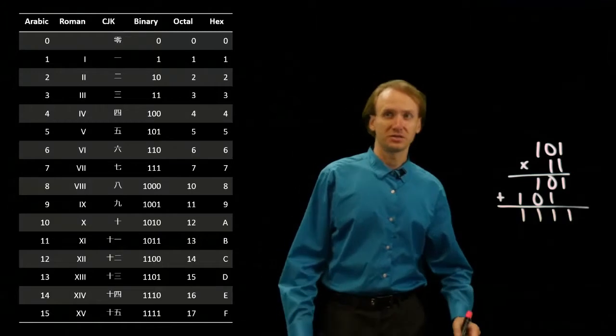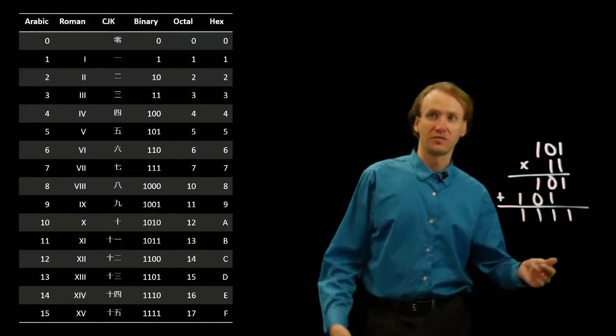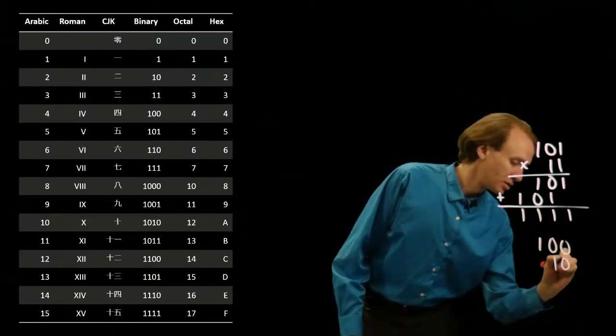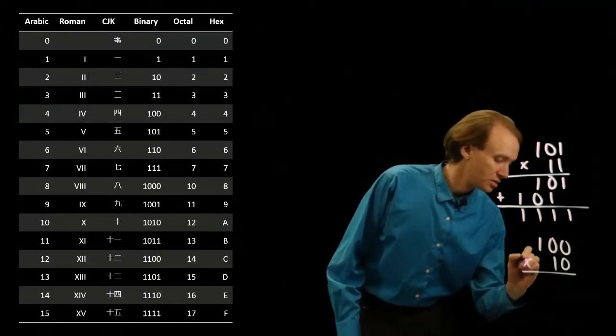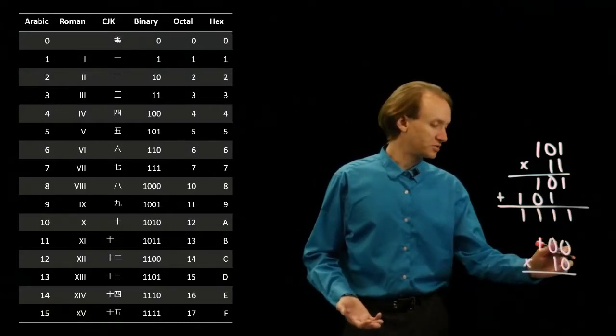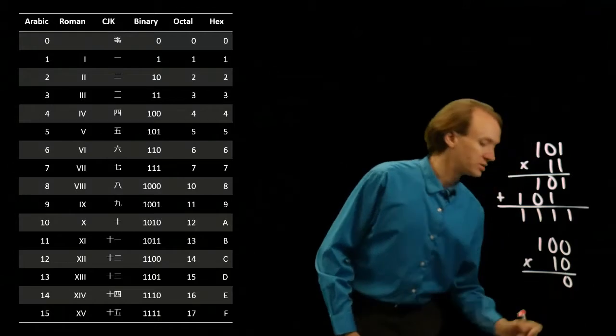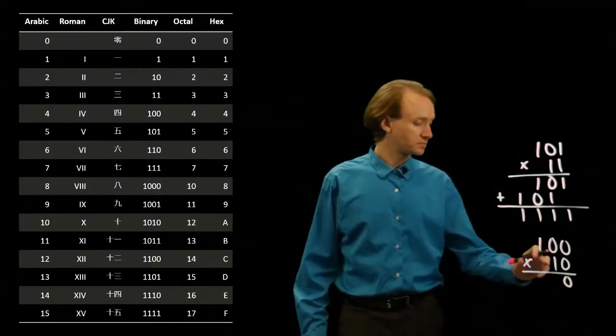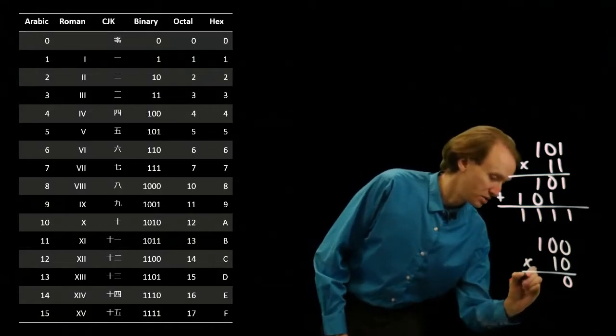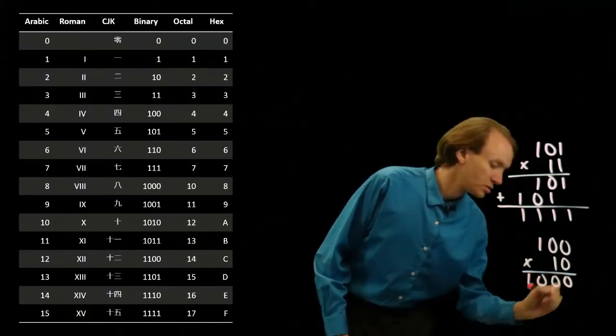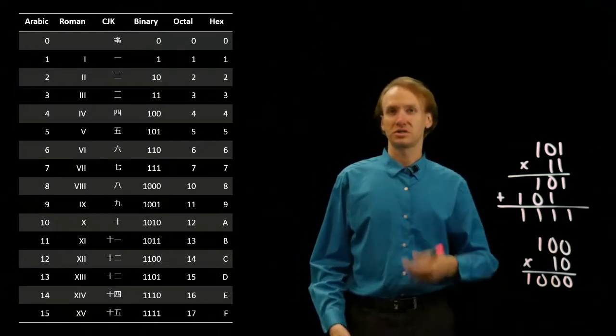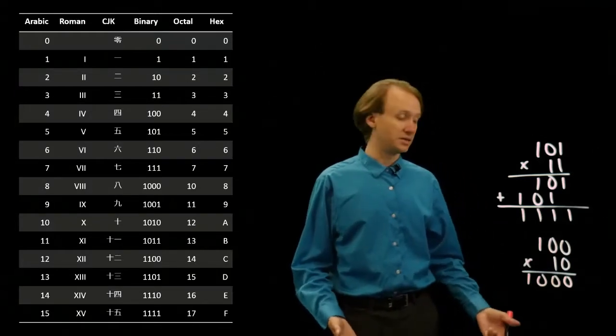If I try something else like 4 times 2, I should expect to get 8 out. So I have 0 times anything is 0, so I'll just have a 0 in that place. And then 1 times anything is the anything, so I'll write down the anything. And I don't even have any addition to do this time, I can just look over and see that that is 8 in binary.